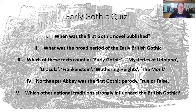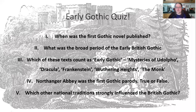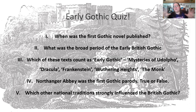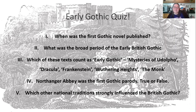Before we get started I've got a little quiz. The first question: when was the first Gothic novel published? What was the broad period of the early British Gothic? Which of these texts count as early British Gothic — Mysteries of Udolpho, Dracula, Frankenstein, Wuthering Heights, The Monk? And then: was Northanger Abbey the first Gothic parody — true or false? And which other national traditions strongly influenced the British Gothic?